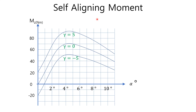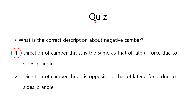This picture represents the contribution of camber torque to the total self-aligning moment M sub z, which is the moment sum of camber trail and pneumatic trail. As you can see, in the lower range of side slip angle, the contribution of camber torque to the entire self-aligning moment M is almost constant. The answer to the quiz is: the direction of camber thrust is the same as that of lateral force due to side slip angle.